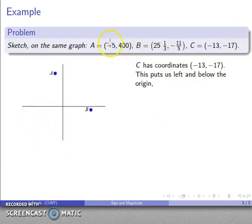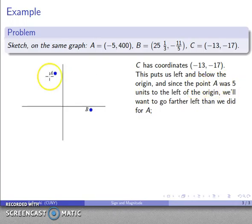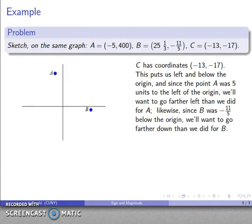And here we may want to make a comparison. We do have some other points that we've graphed, and the more points you graphed, the more you want to make sure that your new points are consistent with the previous points. So this point A was 5 units to the left of the origin. I want to be negative 13 units from the origin. I want to be farther to the left than I was at A, farther down than I was at B, and I'm going to plot C roughly there.